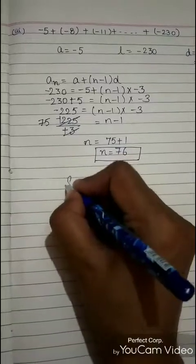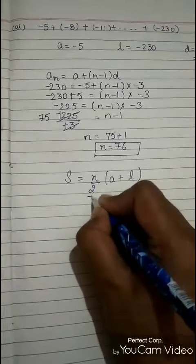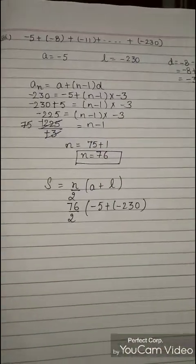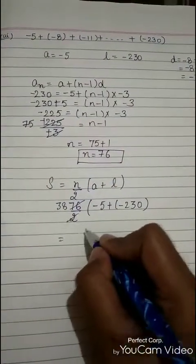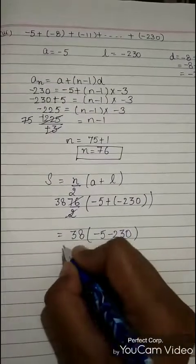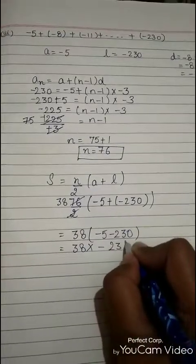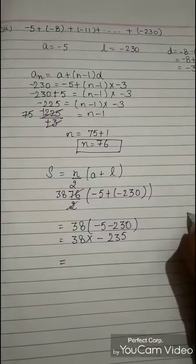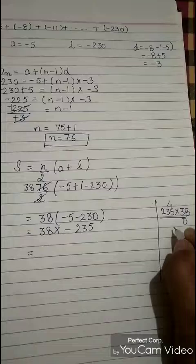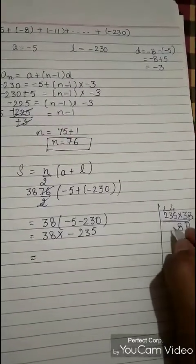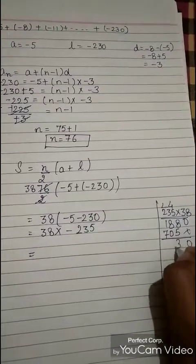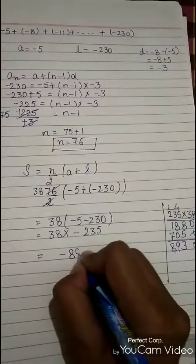Now find the sum. S equals N upon 2 into A plus L. N is 76 upon 2, A is minus 5 plus minus 230. Cancel to get 38. Then minus 5 minus 230 equals minus 235. So S equals 38 into minus 235. Multiplying 235 into 38: 8 fives are 40, working through the multiplication gives 8930, so the sum is minus 8930.